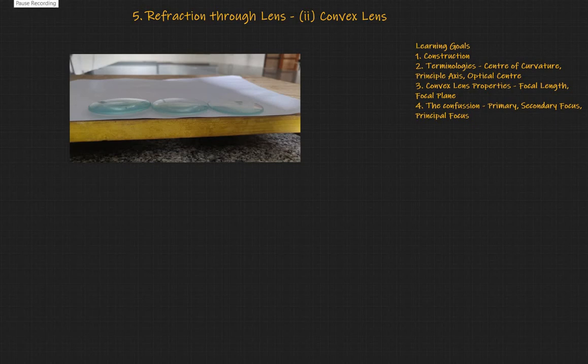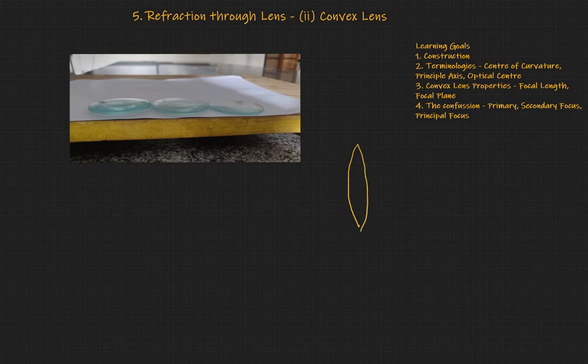Welcome to this video on refraction through lenses. In this video we're going to talk about convex lenses. As you can see, these are the different types of convex lens we have. Usually this convex lens is drawn like this — that's how it looks when you keep one of these lenses vertically.